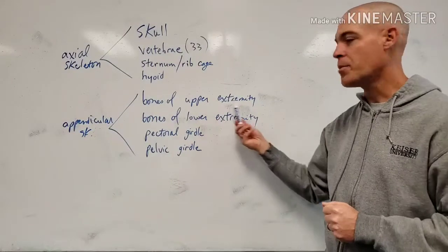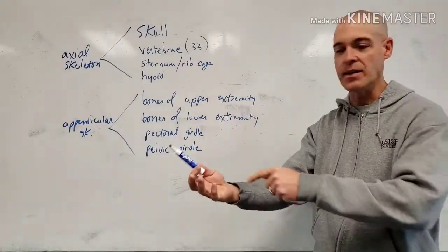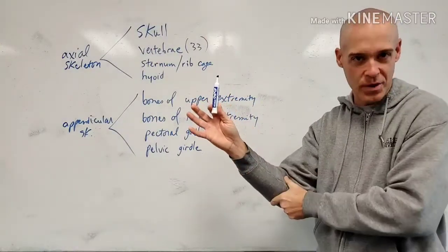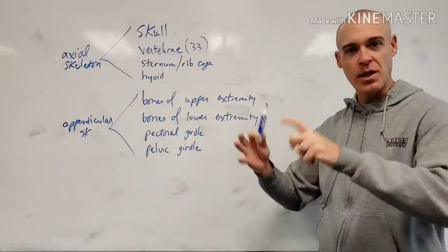It's all the bones of the upper extremity. So we're talking all the bones in your hand, wrist, forearm, radius, ulna, humerus. So a lot of bones.